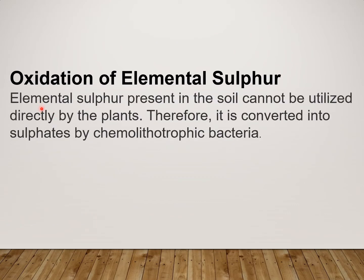Elemental Sulphur present in soil cannot be utilized directly by plants and therefore it gets converted into Sulphate by chemolithotrophic bacteria. Further oxidation of elemental Sulphur is carried out by chemolithotrophic bacteria — for example Beggiatoa and Thiobacillus — which are responsible for the further oxidation of elemental Sulphur into Sulphate.